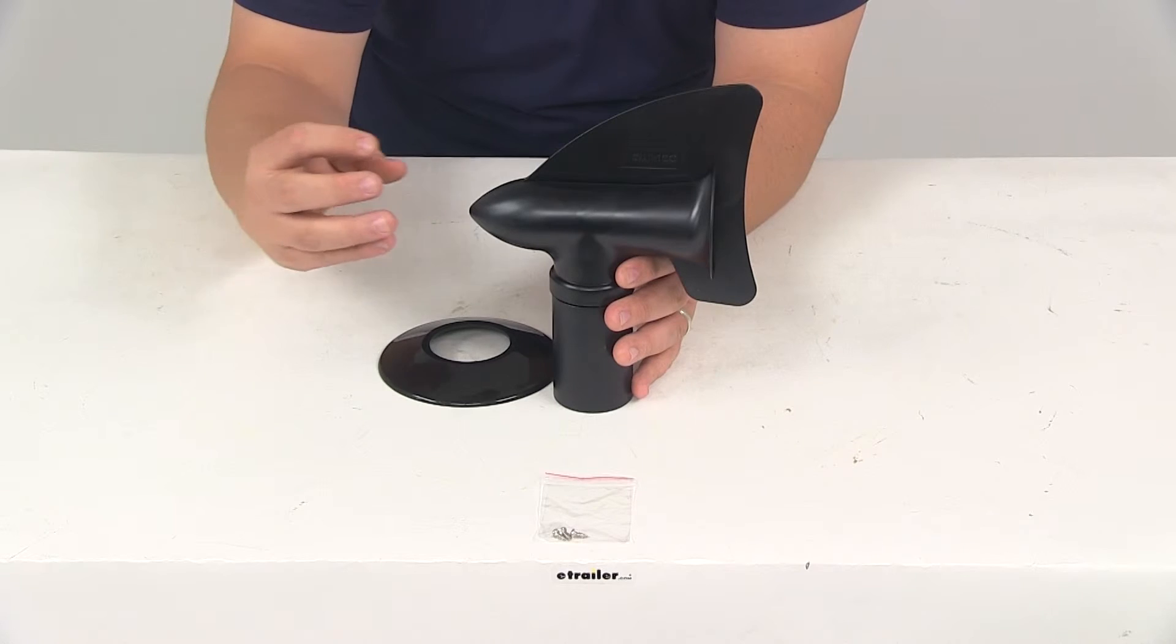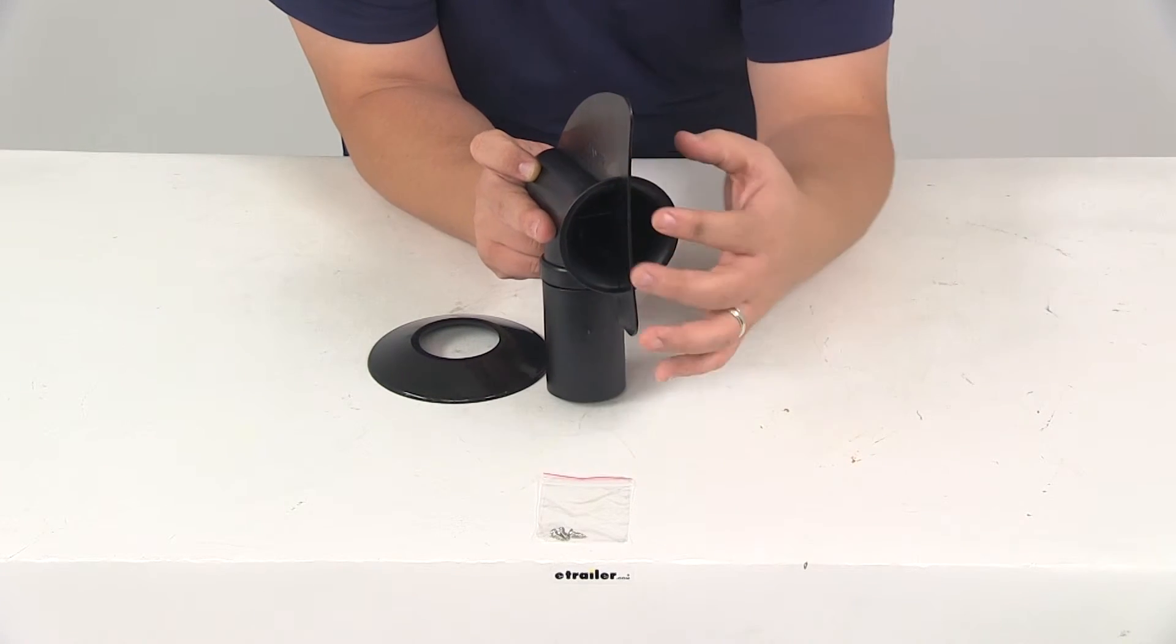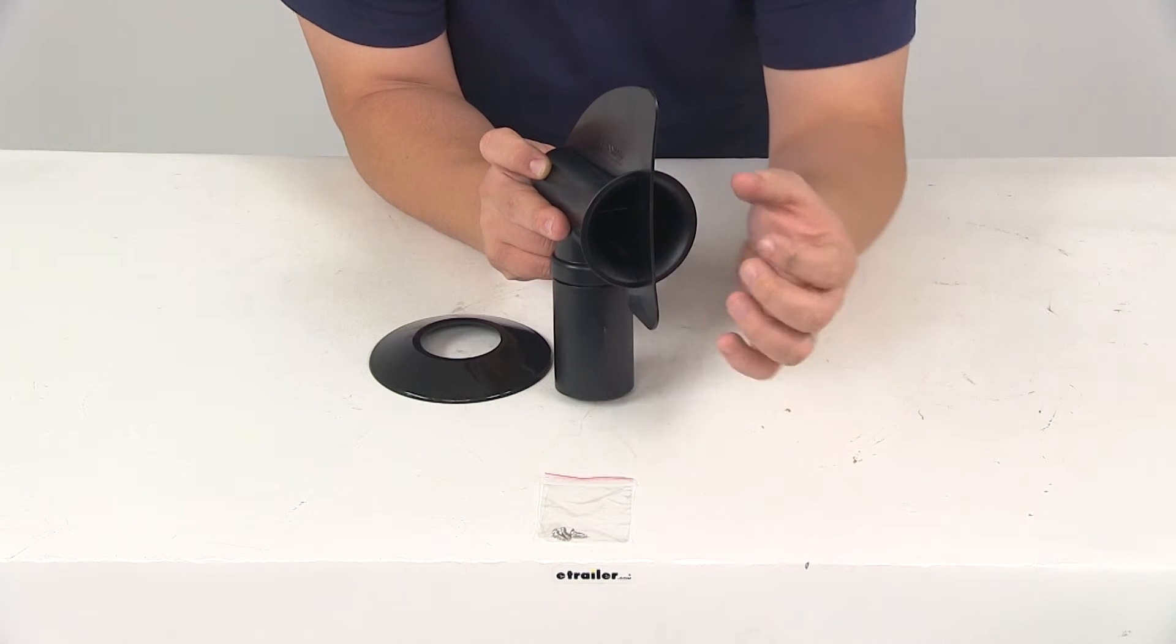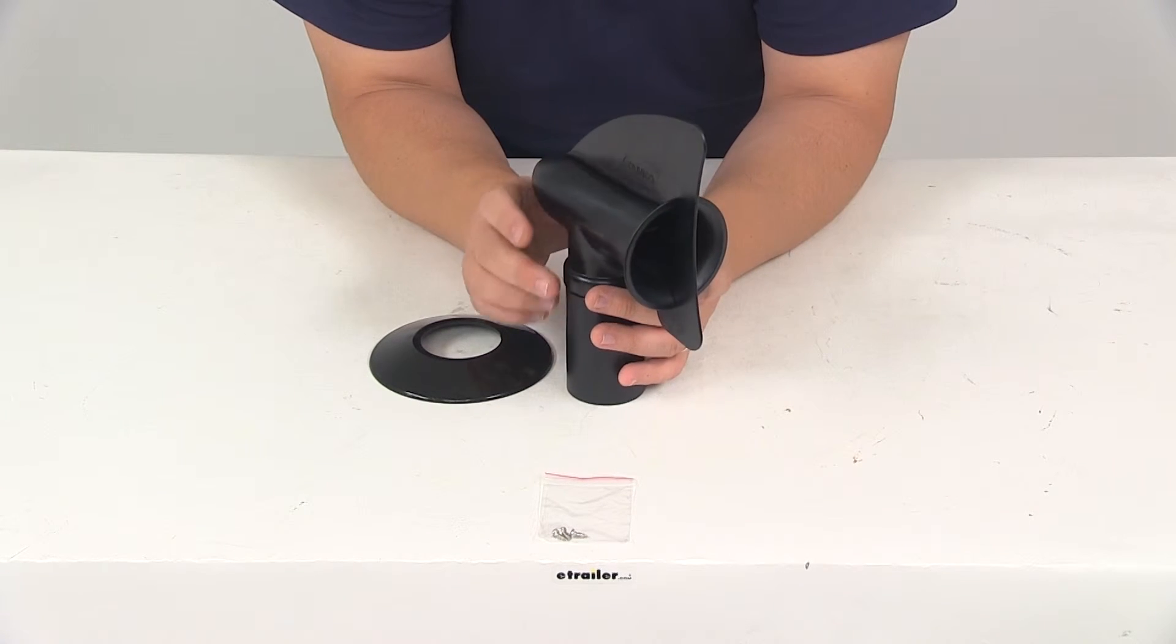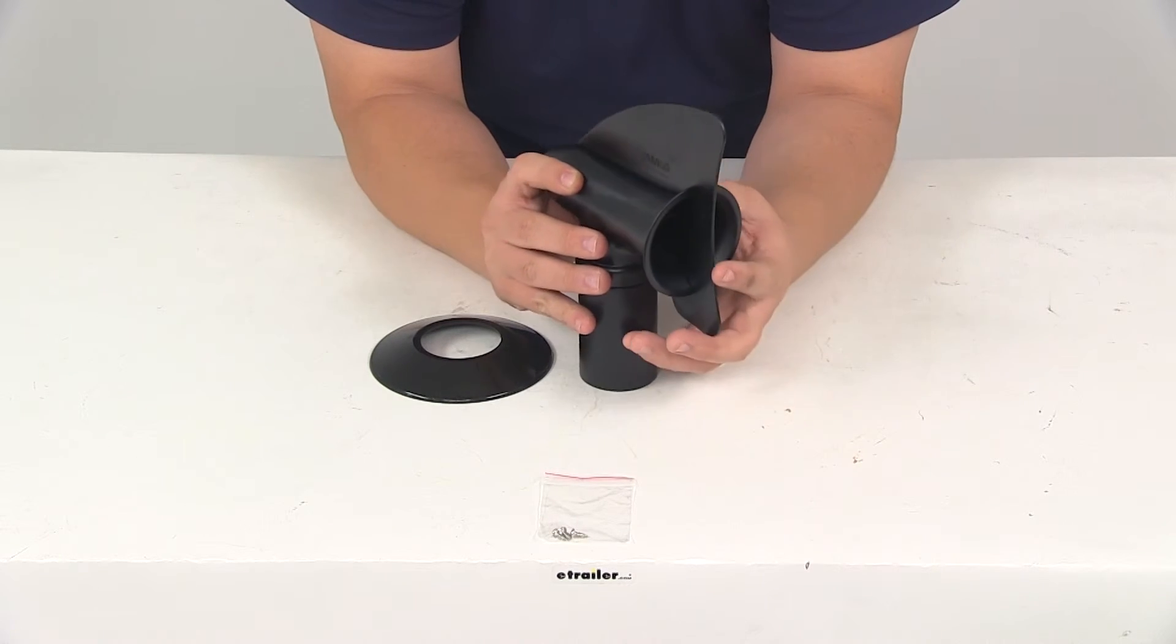The way this works is the wind would come in at this direction. It would come over the opening and then it would pull out the odors from the sewage tank. You got this connected to your piping. Your piping runs to the sewage tank.